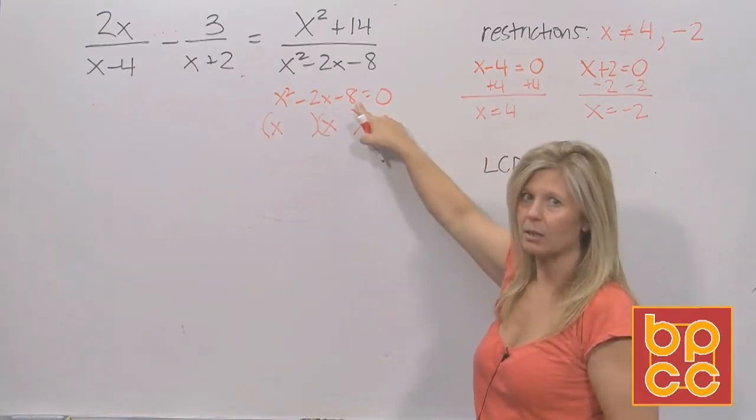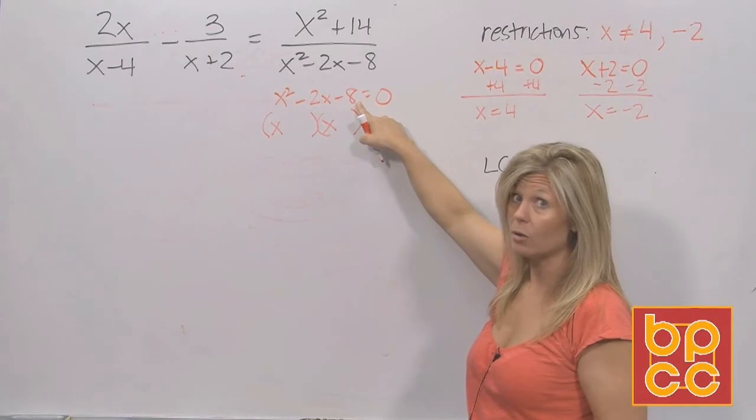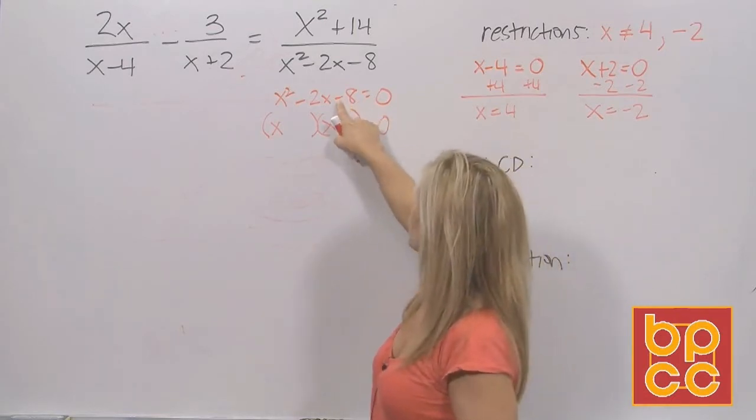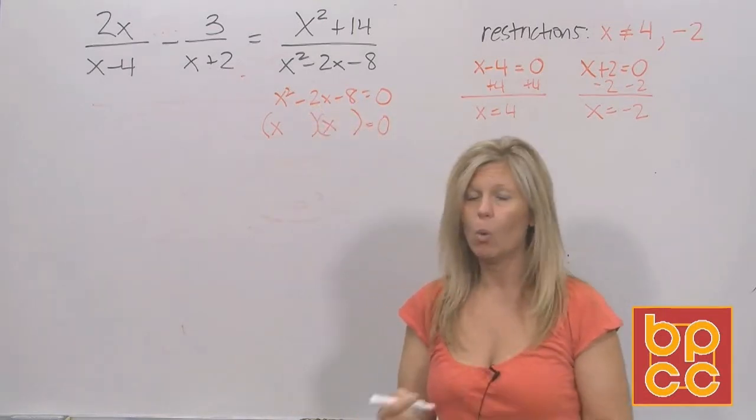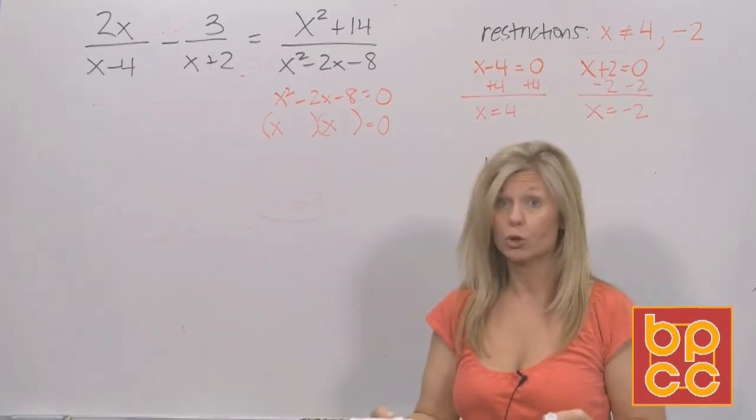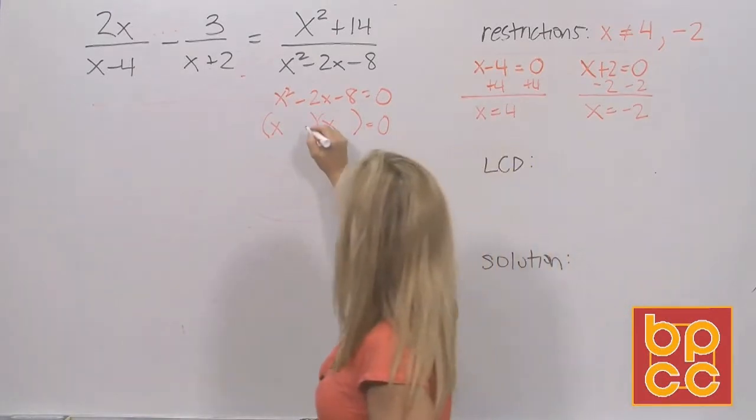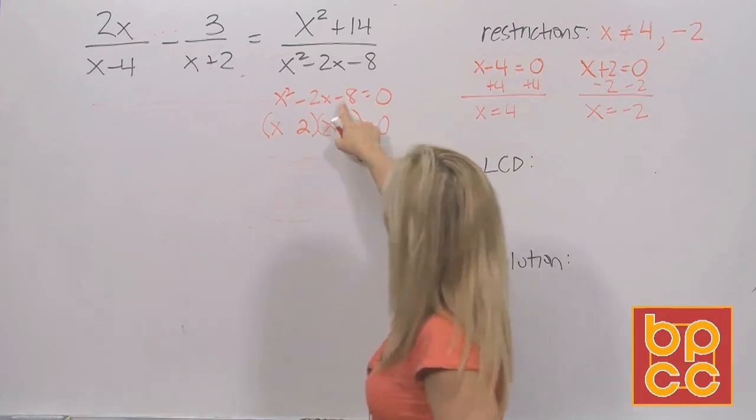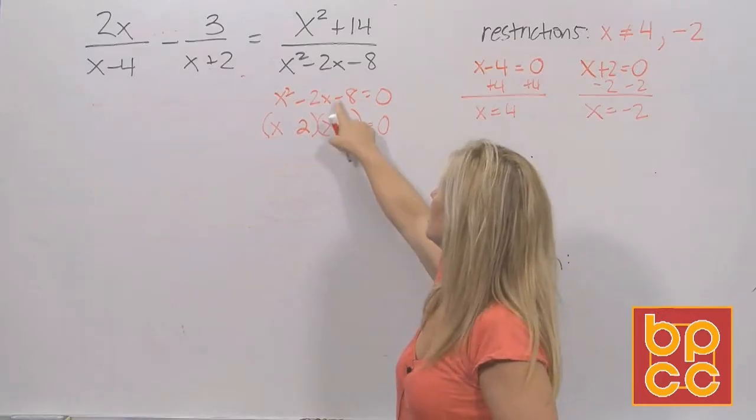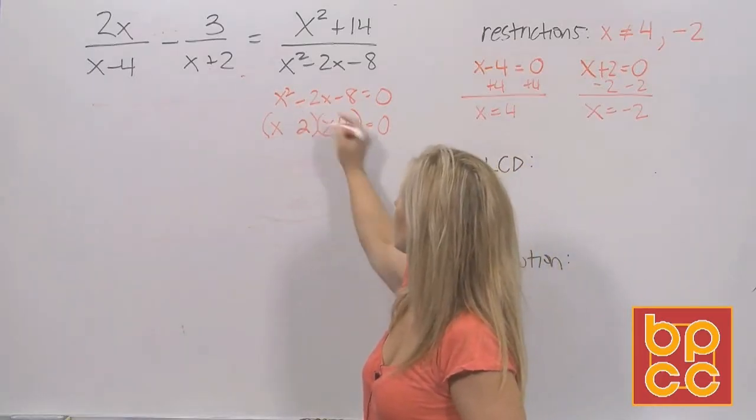What multiplies the x squared x and x? I want to multiply to 8. Well, that could be 1 and 8 or 2 and 4. But I want to subtract to be 2. Will 1 and 8 subtract and make 2? No. Will 2 and 4 subtract and make 2? Yes. Subtract means they have to be different signs. Subtract into a negative. This negative goes to the bigger number.